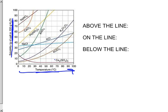When we're reading this graph, if we want to know about the number that's on the line, remember that on the line means that it is a saturated solution. Above the line means that it's supersaturated, and below the line means that it is unsaturated.